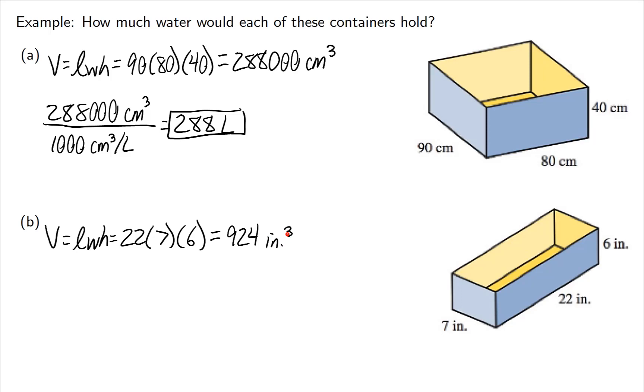Now on the previous slide, we saw that there were 231 inches cubed in a gallon. Let's do the division. If we do this, we actually get exactly 4 gallons.